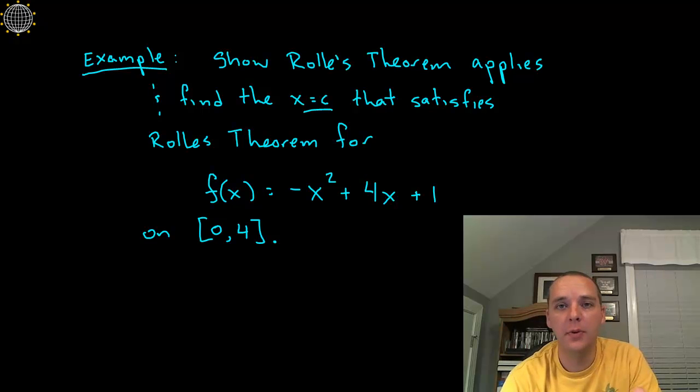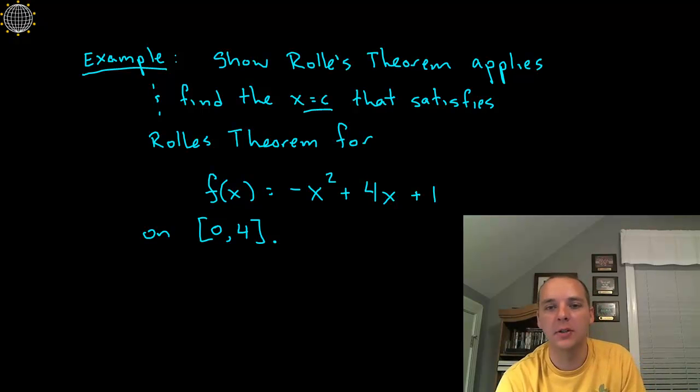This is a very typical example dealing with Rolle's Theorem. We're supposed to show that Rolle's Theorem is applicable for this function, and if it is applicable, find the x value, find x equals c that will satisfy Rolle's Theorem. So here's our function, f of x equals negative x squared plus 4x plus 1, on the particular interval 0 to 4.